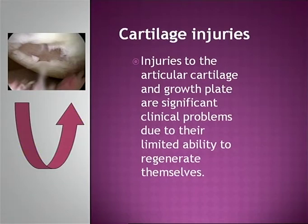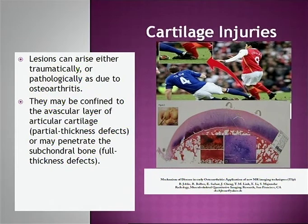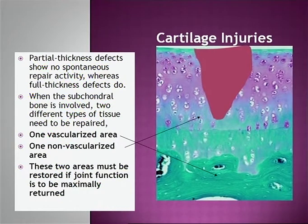If we look upon injuries to articular cartilage and growth plate, there are significant clinical problems due to their limited ability to regenerate. Lesions can arise either traumatically or pathologically as osteoarthritis. They may be confined to the avascular layer of articular cartilage — what we call partial thickness lesions — or they may penetrate into the subchondral bone, full thickness cartilage lesions.